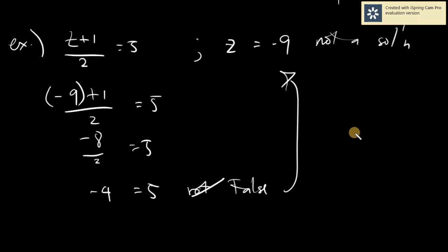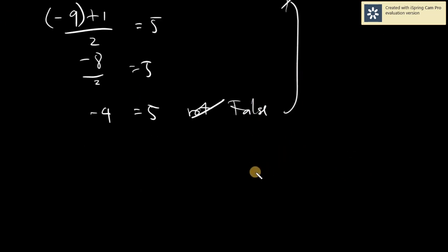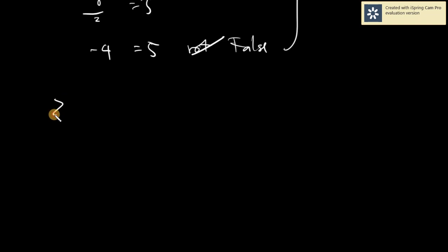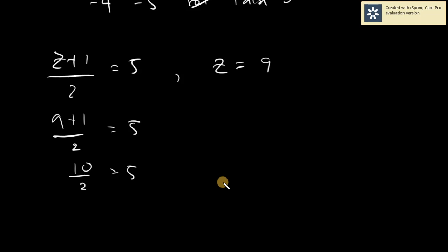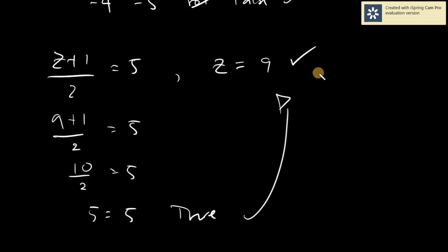What value of Z satisfies Z plus 1 over 2 equals 5? Say Z equals positive 9: 9 plus 1 over 2 equals 5, and 9 plus 1 is 10 over 2, which gives us 5 equals 5. This is true. Therefore, Z equals 9 is the correct solution — and no other solution exists for this given equation.